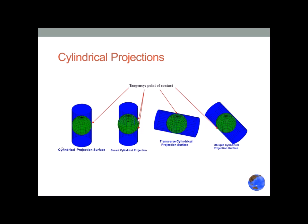You can also do a transverse cylindrical projection — Universal Transverse Mercator is the one generally referred to. Its point of tangency is on the meridians, the lines that run north and south and define longitude, which is east and west. And then you have oblique, which is not used that often.